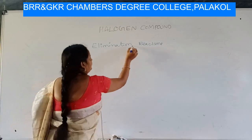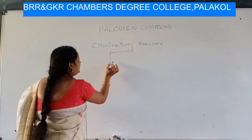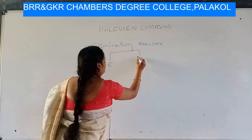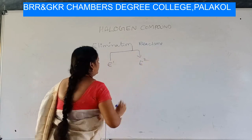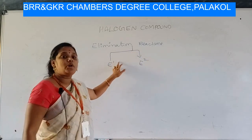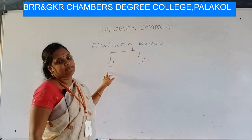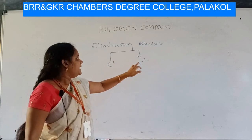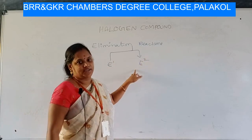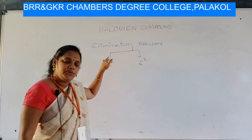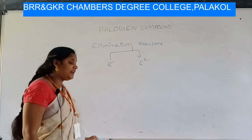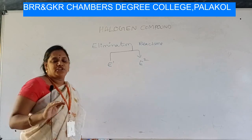Elimination reactions are of two types: E1 and E2. E1 means unimolecular elimination reactions. E2 means bimolecular elimination reactions.